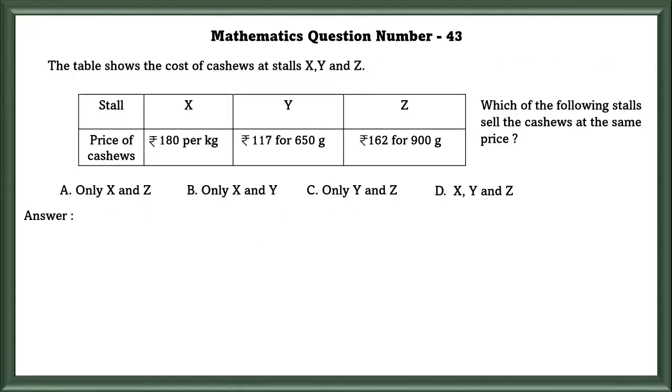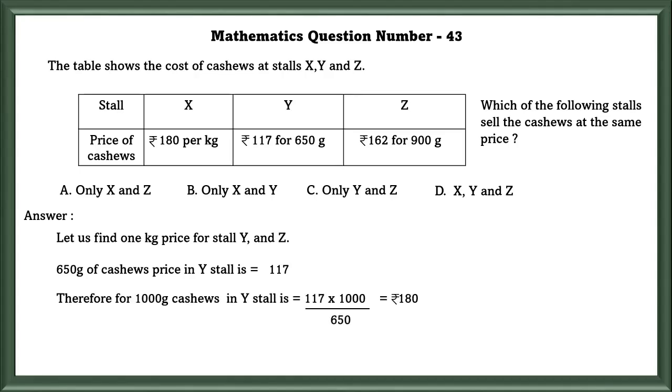Mathematics question number 43. The table shows the cost of cashews at stalls X, Y, and Z. Which of the following stalls sell the cashews at the same price? Let us find 1 kg price for stall Y and stall Z. 650 grams of cashew price in Y stall is 117. Therefore, 1000 grams of cashews in stall Y equals 117 into 1000 divided by 650, equals 180 rupees. Similarly, 1000 grams of cashews in Z stall equals 162 into 1000 divided by 900, which equals 180 rupees. So all the stalls have the same price for the cashews.